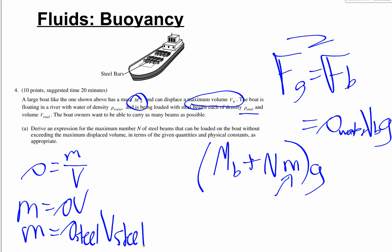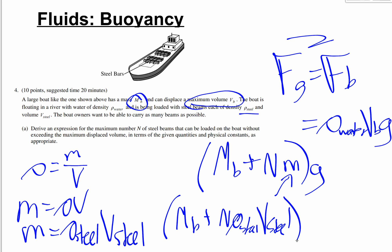So our force of gravity is (mb plus n·rho_steel·v_steel) times g, and that equals rho_water·vb·g. Then you solve for n. The key starting point is always fg equals fb — that's the important part.